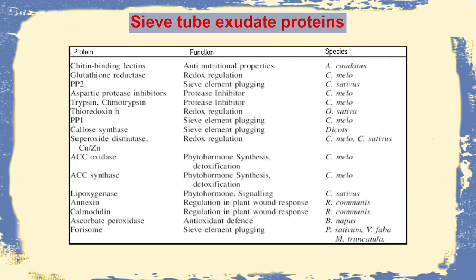Considering the different forms of protein, protein may occur in different forms. In the families of Cucurbitaceae and Euphorbiaceae, there are different forms. Chitin binding lectin is the most important anti-nutritional protein, also called anti-protein. Apart from that, there are glutathione reductase, aspartate protease, trypsin, chymotrypsin, PP1, callosynthase, superoxide dismutase, and ACC oxidase, having different growth, plugging, or hormonal activity. There may also be annexin and calmodulin, which mainly help in the healing of wounds in the plant body.